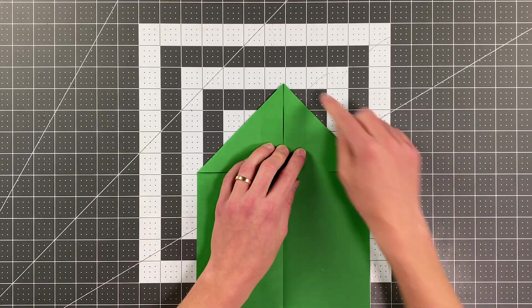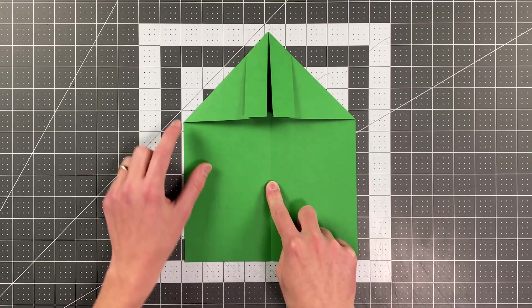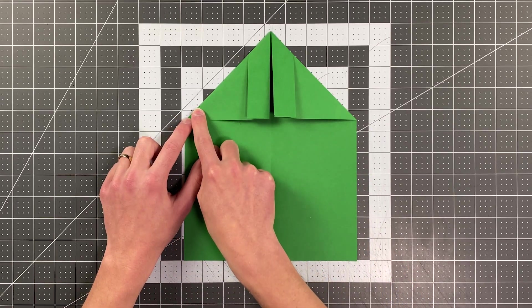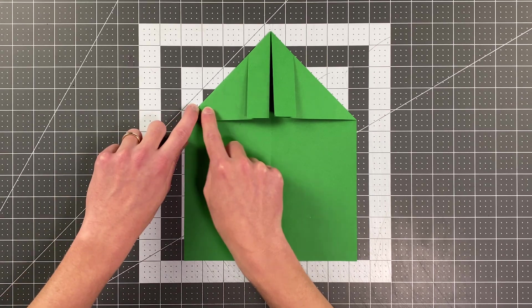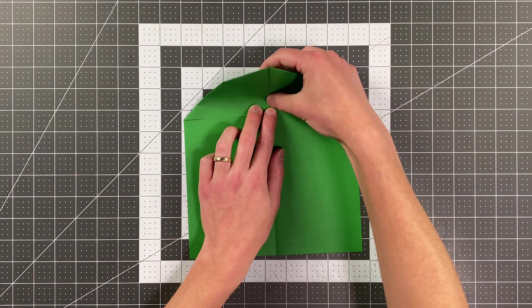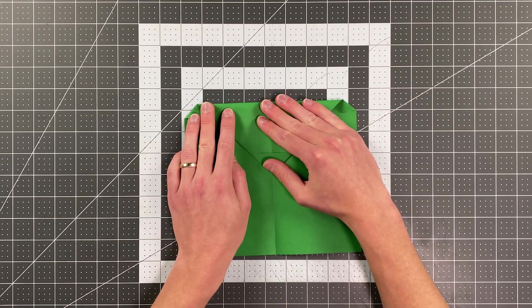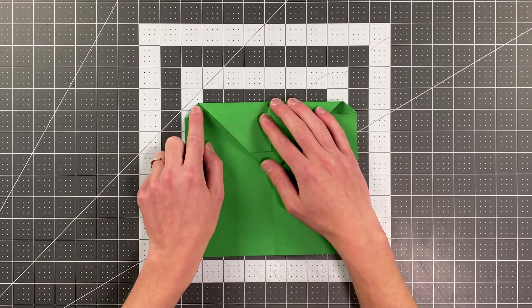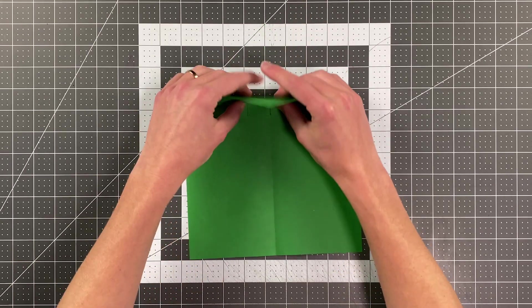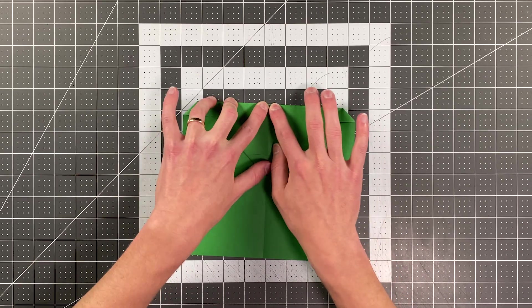And you're going to want to fold this top edge or this top point rather down to land on the center crease. And the crease you make should go right through this mark you made across the page. So you'll want to make sure you're controlling these layers as you do this so they don't move too much. Pull down. Make sure that the crease you're about to make is going through that mark you made. And it should look something like this.